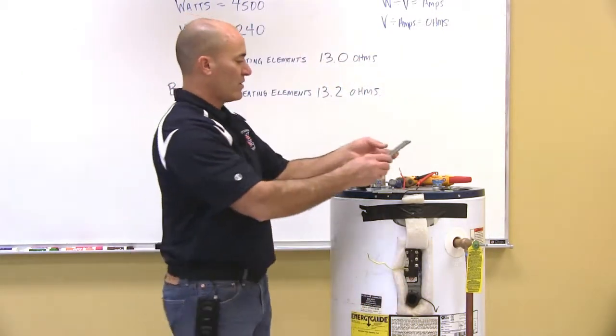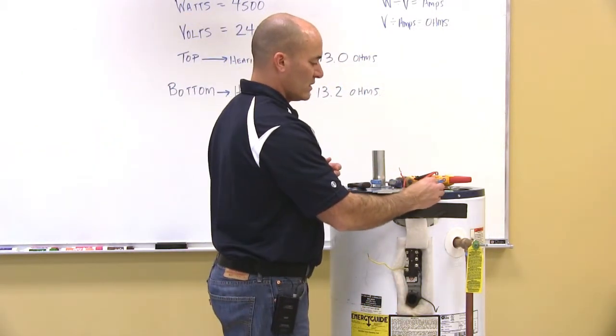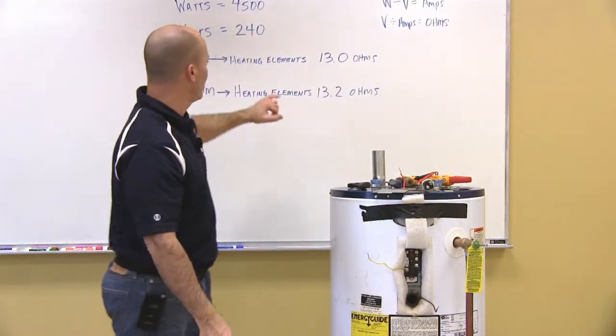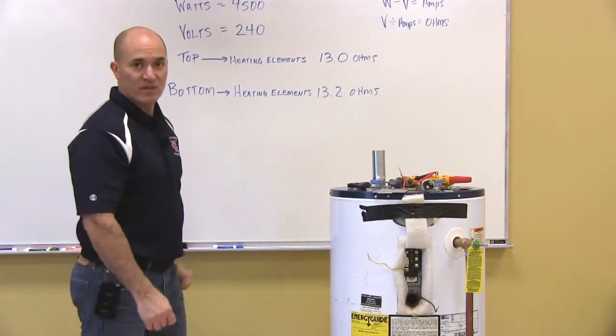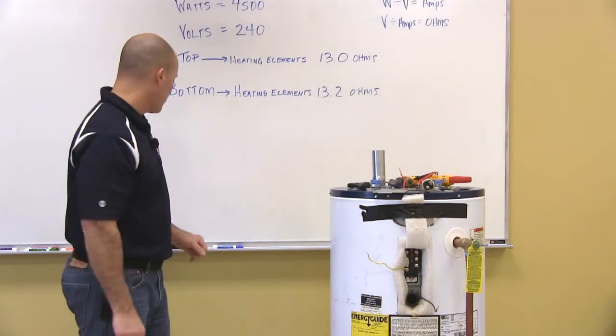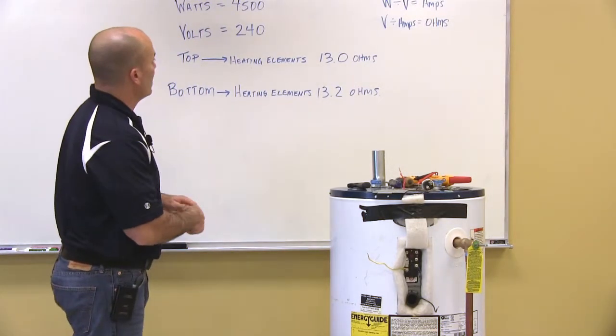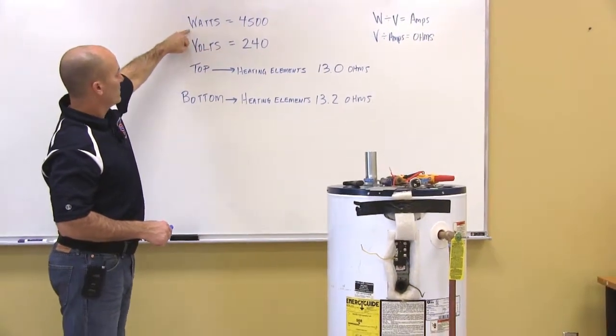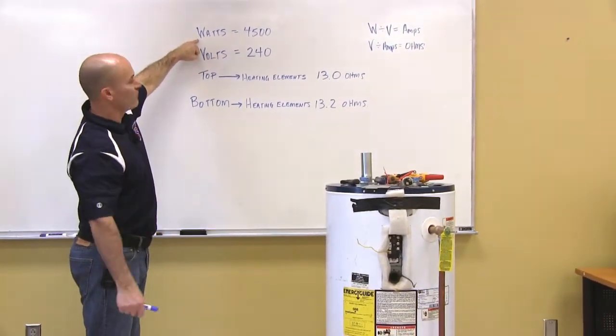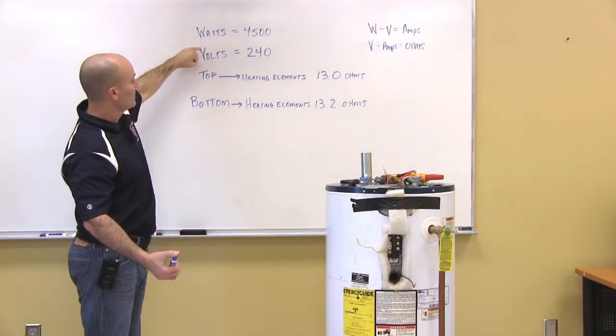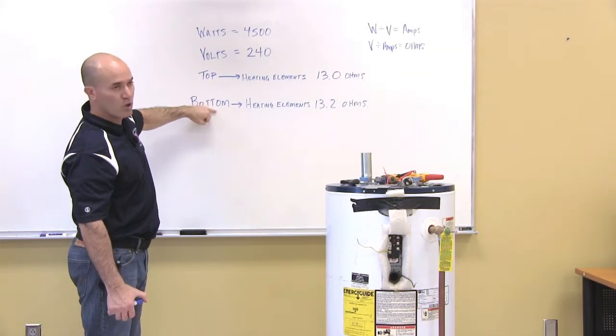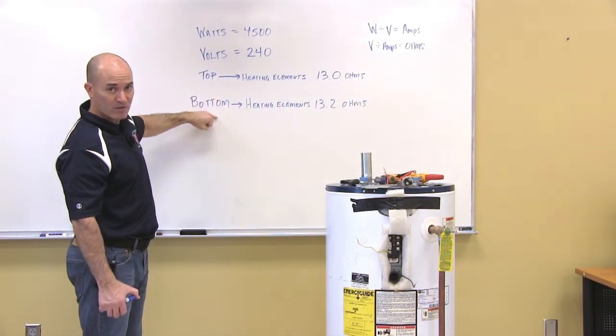So now, what I'm going to do is, I looked at this, I've already tested it, this is the top heating element, it was at 13.0. So I've written all the figures down here for you. We looked at the plate on the tank, it was 4500 connected watts, voltage was 240, and we tested for our ohms reading on both of our heating elements.